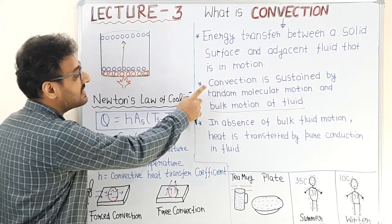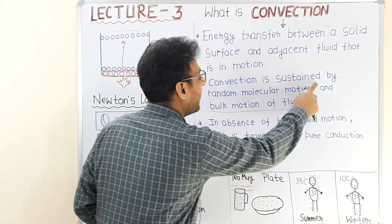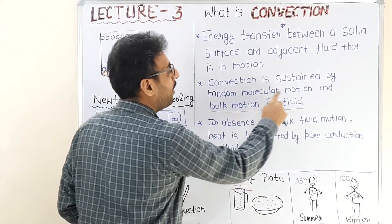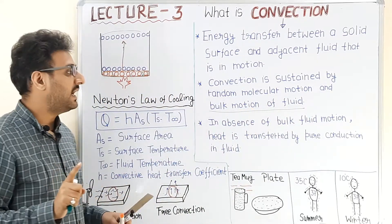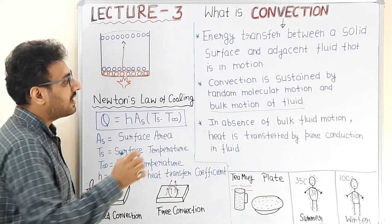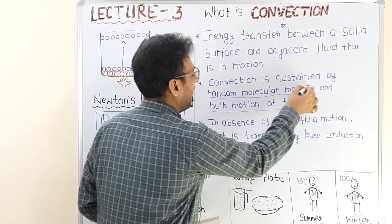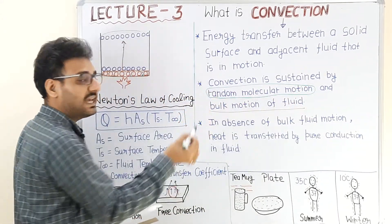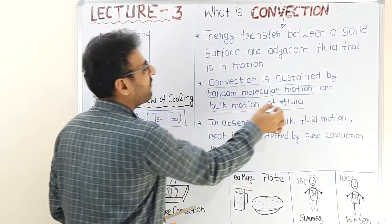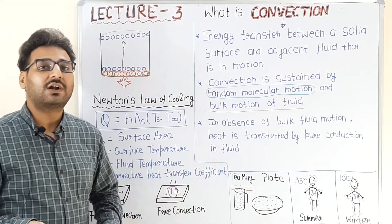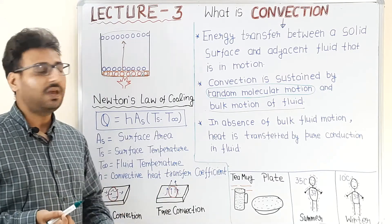Convection is sustained by random molecular motion and bulk motion of the fluid — both are mandatory. In conduction, random molecular motion in fluid happens, but if it is accompanied by bulk motion of the fluid, then conduction is converted into convective heat transfer in the fluid.